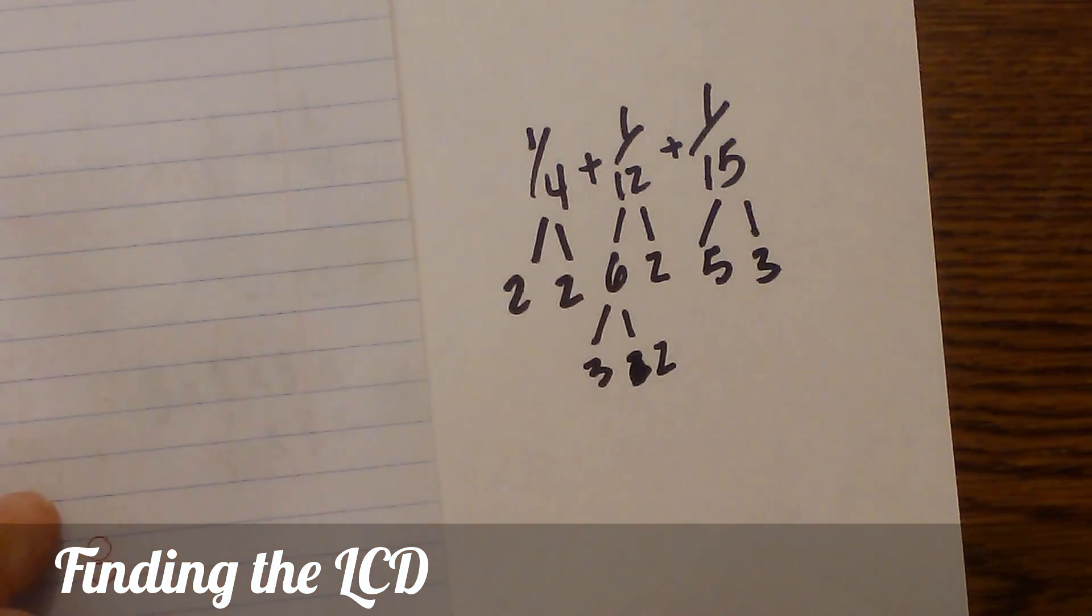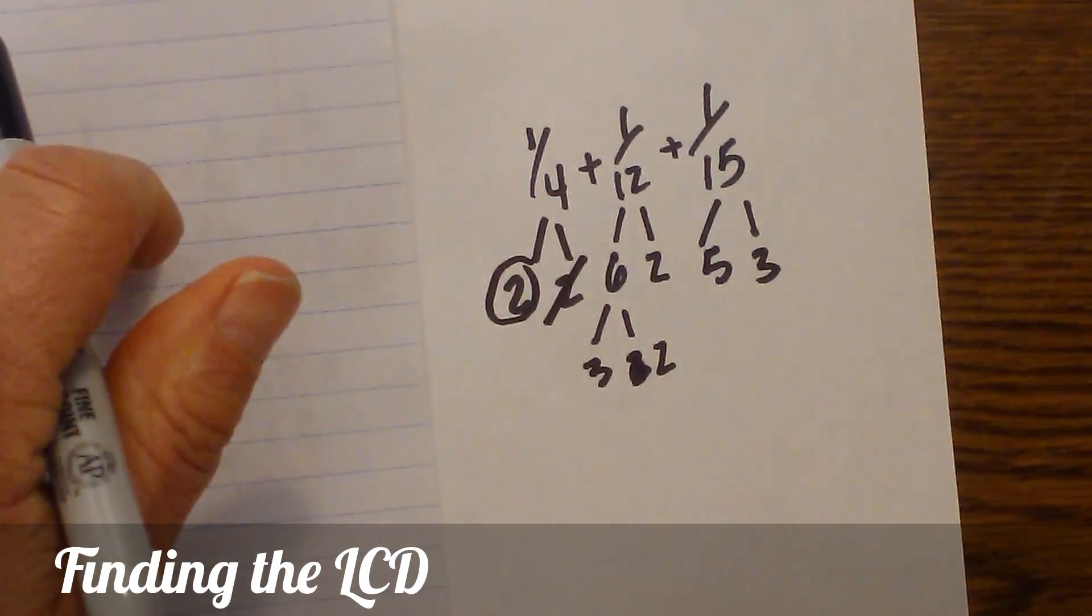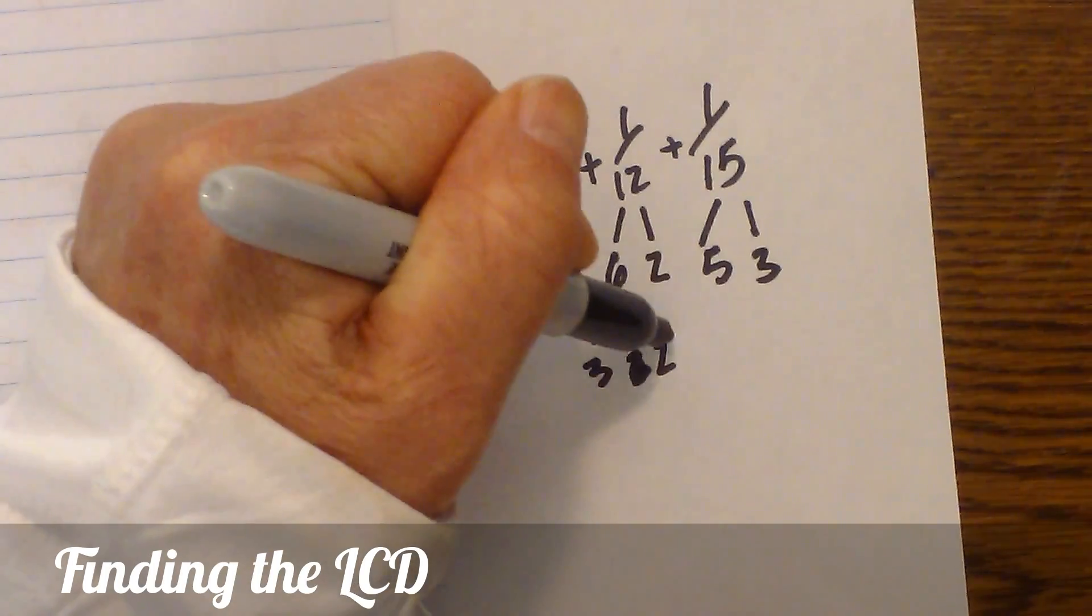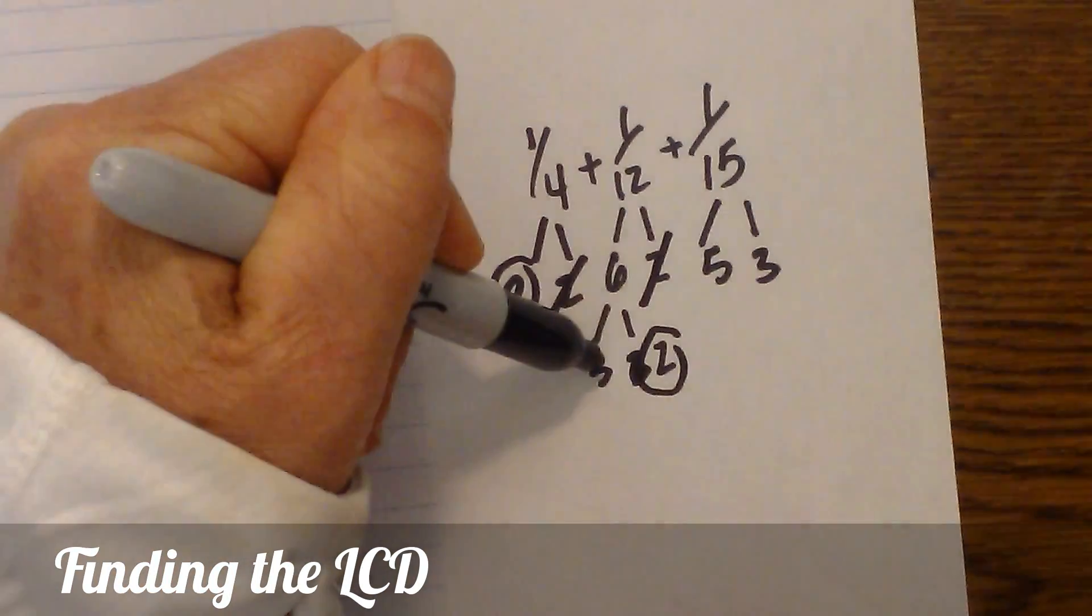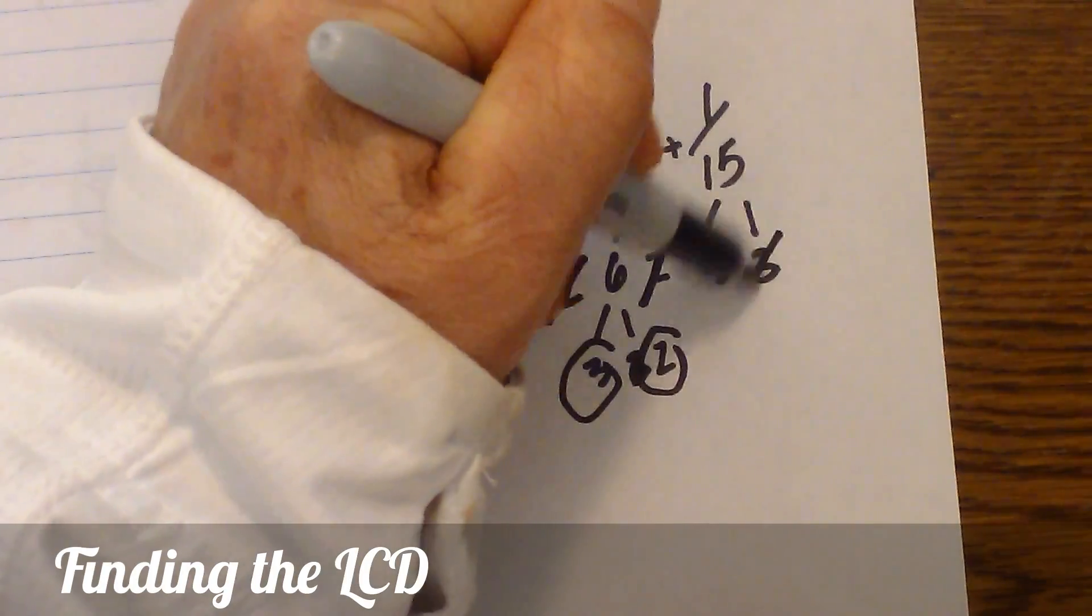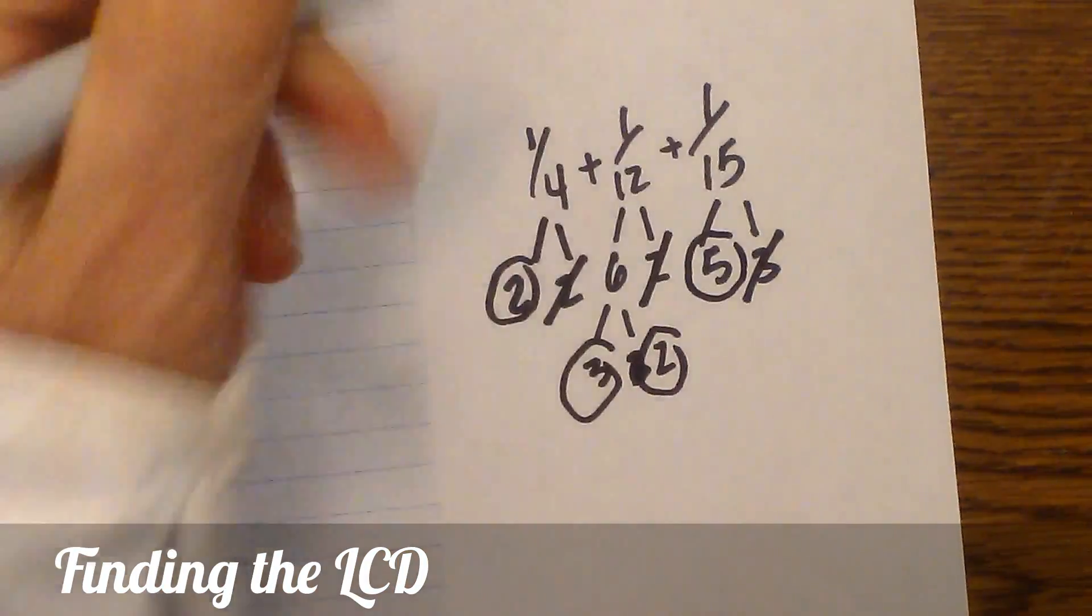Now we will begin circling and crossing them out. Circle, cross out. Then we have another two, circle and cross out. Then we have threes, circle and cross out. The five, there's not another five, so I will circle.